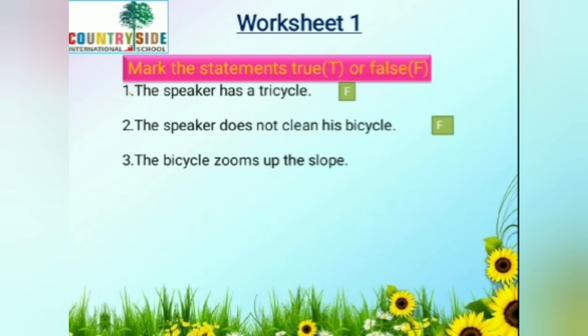Third: the bicycle zooms up the slope. Is it correct? No — the bicycle zooms down the slope. When you are coming down the slope, that's when you can go very fast without making any efforts. Here they have given 'the bicycle zooms up the slope,' which is false.